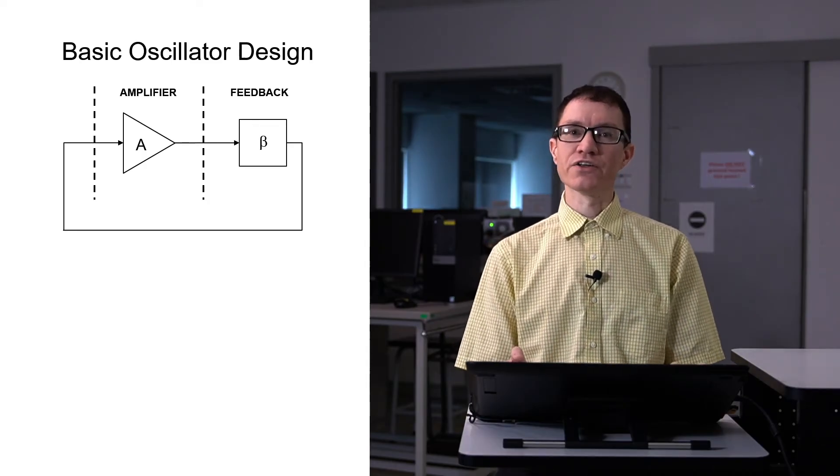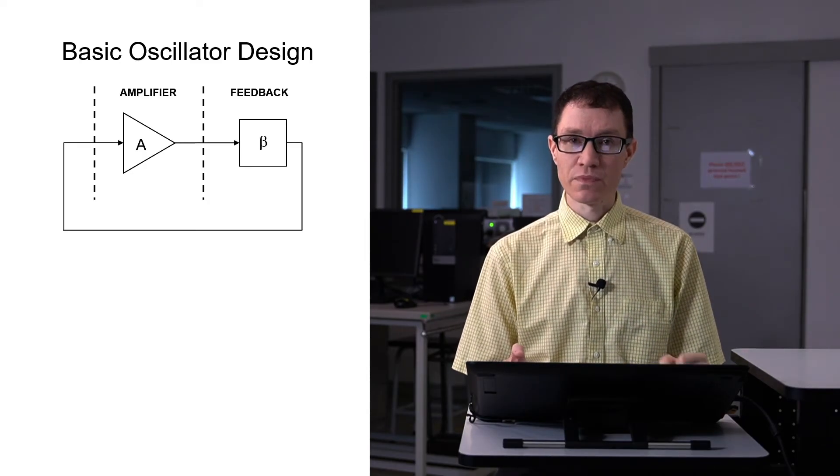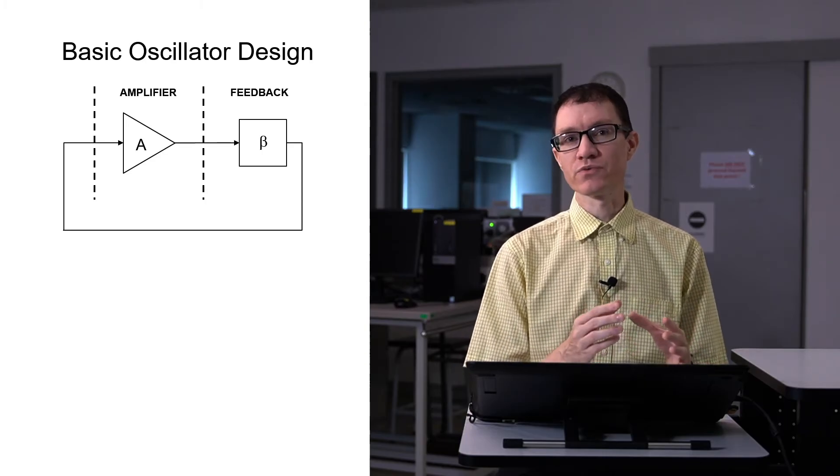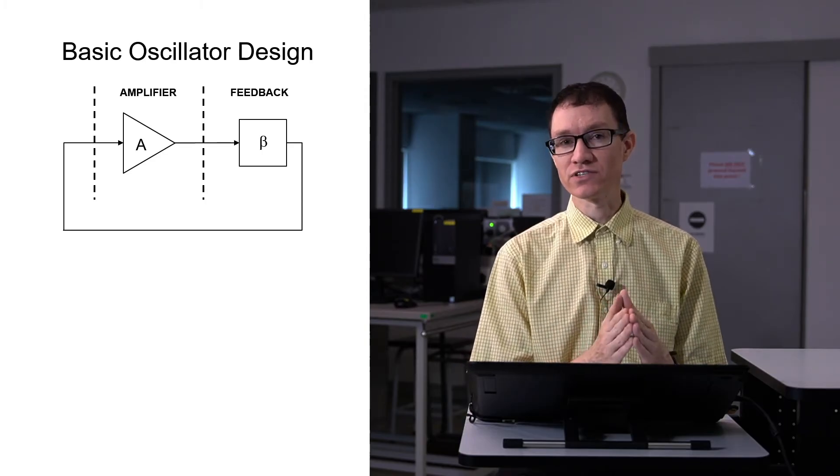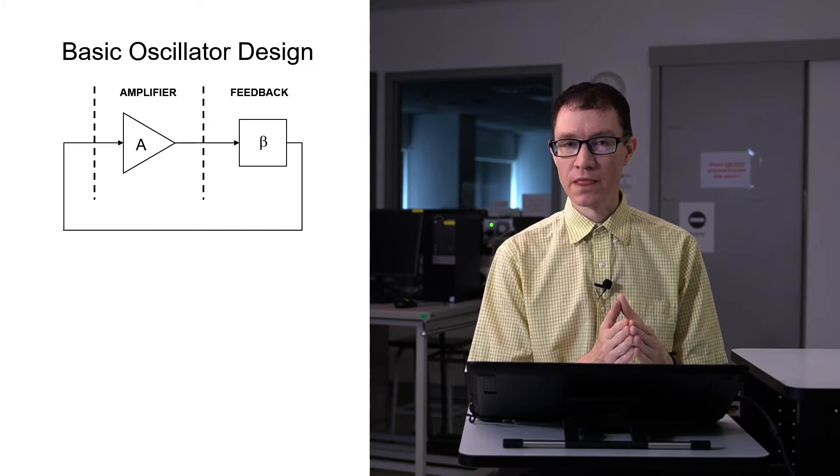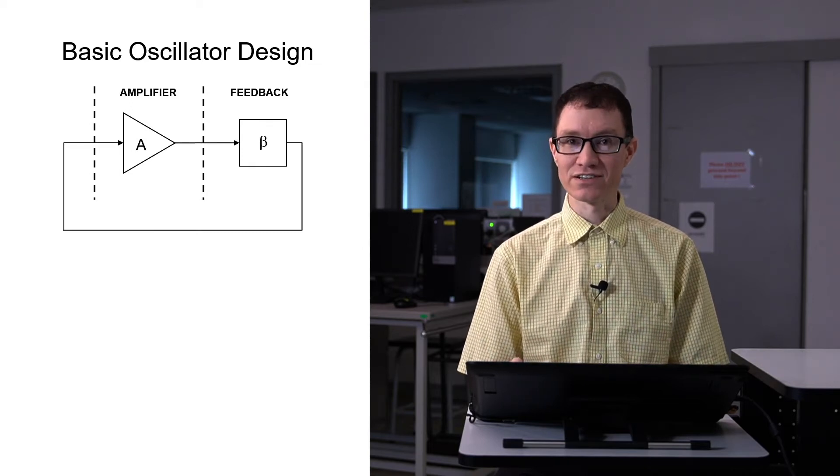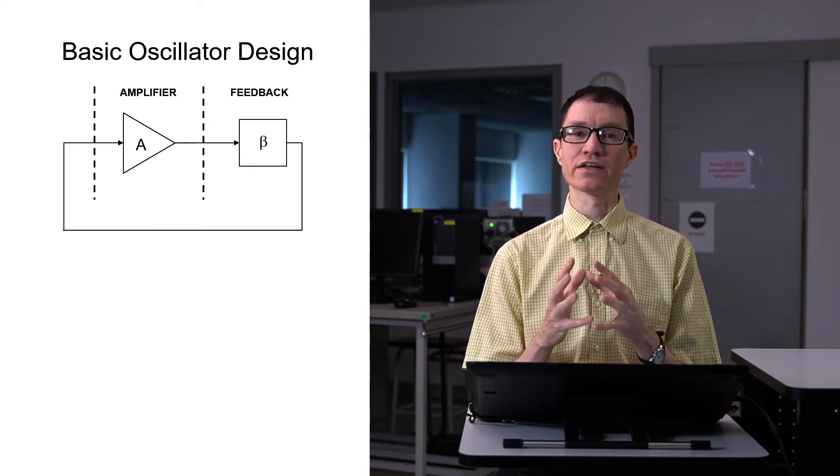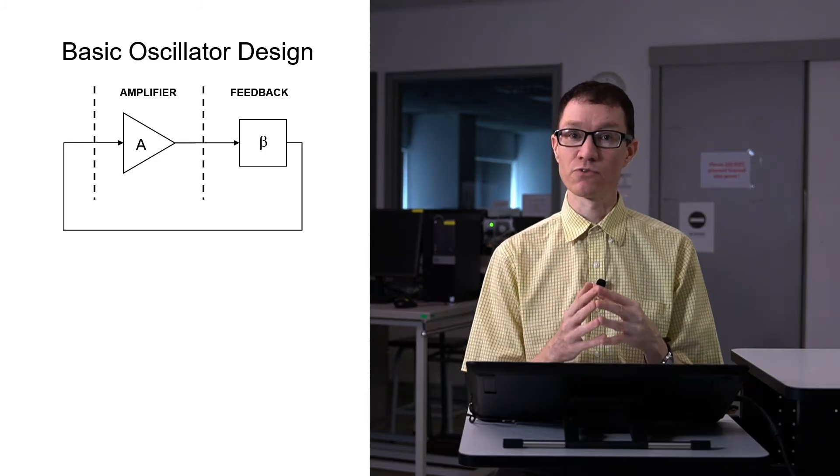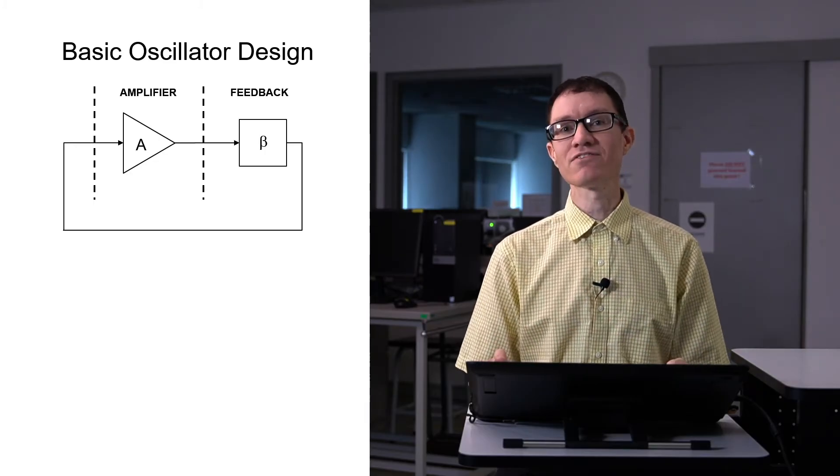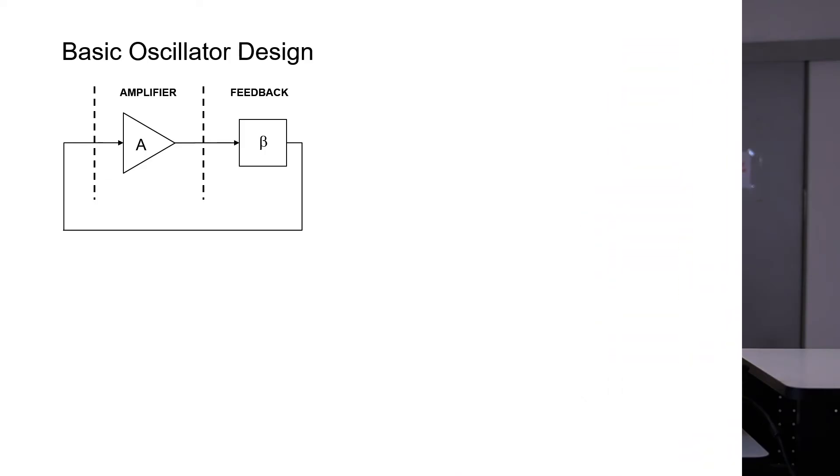If you were to try to design an RC oscillator at radio frequencies, you would find that the resistor and capacitor values tend to be very, very small. It's better to use an LC oscillator. That is, to use inductors and capacitors in the feedback network for the filter. That's the kind of oscillator we're going to look at in this video.